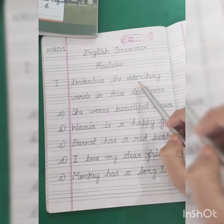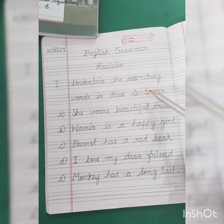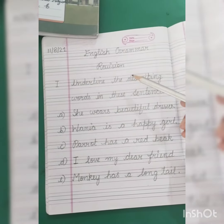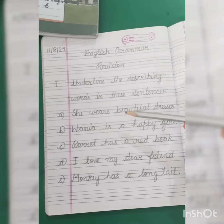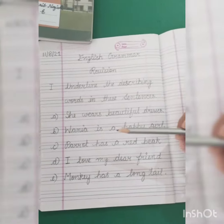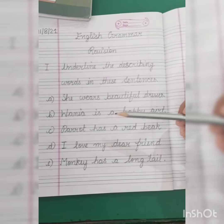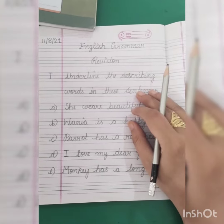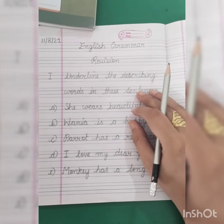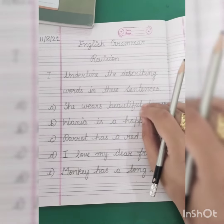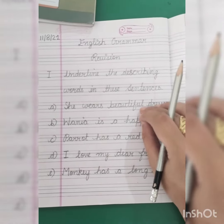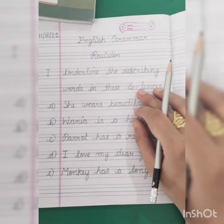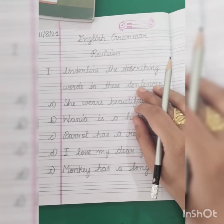Now the question: Underline the describing words in the sentences. Ye aapko sentences diye huye hain aur aapko describing word ko underline karna hai. Chaliye, mein aapko phirse revision kara deti hoon ki describing words kya hote hain. Joh naming words ke shape ko, size ko, color ko define karein — usse hum kya kehtay hain? Describing word kehtay hain.